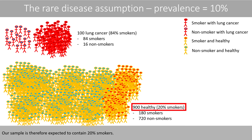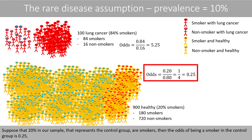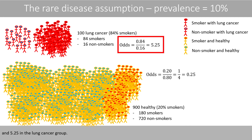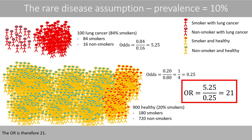Our sample is therefore expected to contain 20% smokers. Suppose that 20% in our sample representing the control group are smokers. Then the odds of being a smoker in the control group is 0.25 and 5.25 in the lung cancer group. The odds ratio is therefore 21.